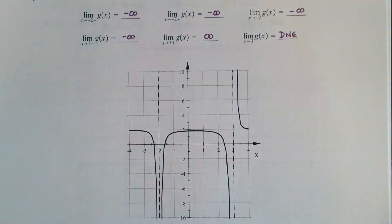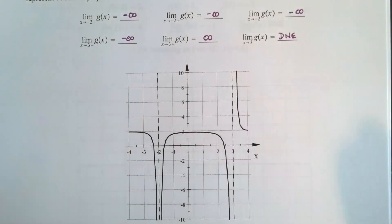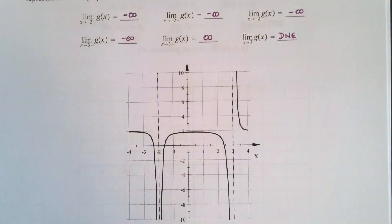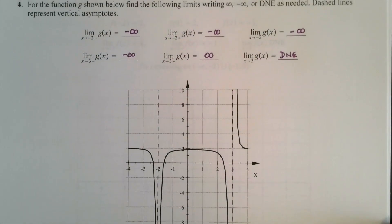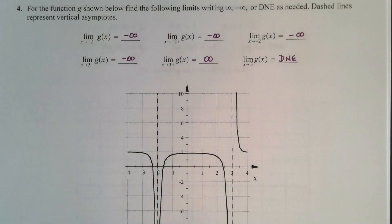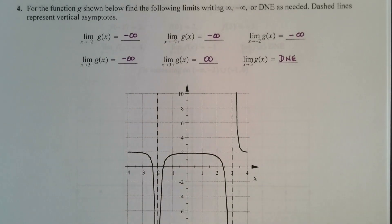We have to approach positive infinity from both sides or negative infinity from both sides for the limit to exist as an infinite limit. In the next video, we're going to show an example of using this information to sketch a graph, and we will finish up our introduction to limits numerically and graphically with that video.